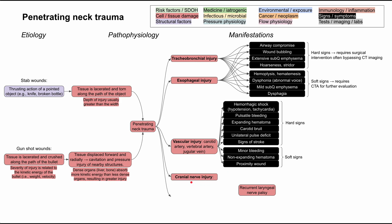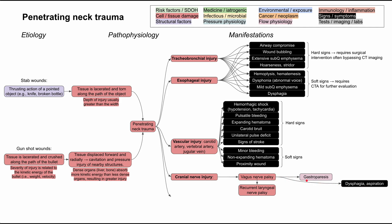Next, let's look at cranial nerve injury. The big cranial nerve that goes through the neck is the vagus nerve, and one of its branches is the recurrent laryngeal nerve. If the vagus nerve is damaged, it can cause dysphagia and aspiration — difficulty swallowing, which can lead to aspiration pneumonia since the windpipe is right next to the esophagus. The vagus nerve also helps with stomach motility, so damage can cause gastroparesis, leading to postprandial fullness and bloating. Additionally, the vagus nerve moves part of the soft palate, so injury can cause flaccid paralysis of the soft palate, resulting in a nasal-sounding speech.